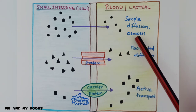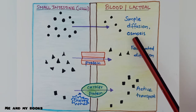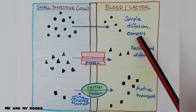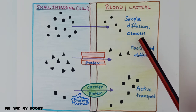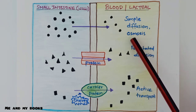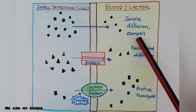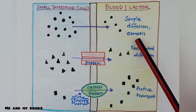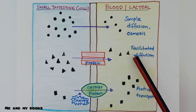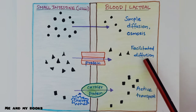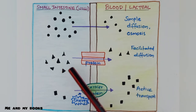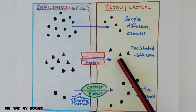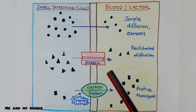Osmosis is the movement of water molecules from a region of higher concentration to a region of lower concentration. Osmosis specifically refers to the movement of water molecules. The third type is facilitated diffusion — that is also the movement of molecules from a region of higher concentration to a region of lower concentration, but there is a difference.